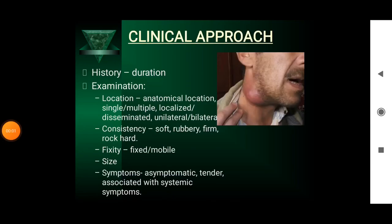Clinically, we need to take the history and then examine the lymph nodes: the anatomical location, whether it is single, multiple, localized or disseminated, unilateral or bilateral. We need to check the consistency — whether it is soft, rubbery, firm or rock hard — whether it is mobile or fixed, the size, and the symptoms, whether it is asymptomatic, tender or associated with any systemic symptoms.